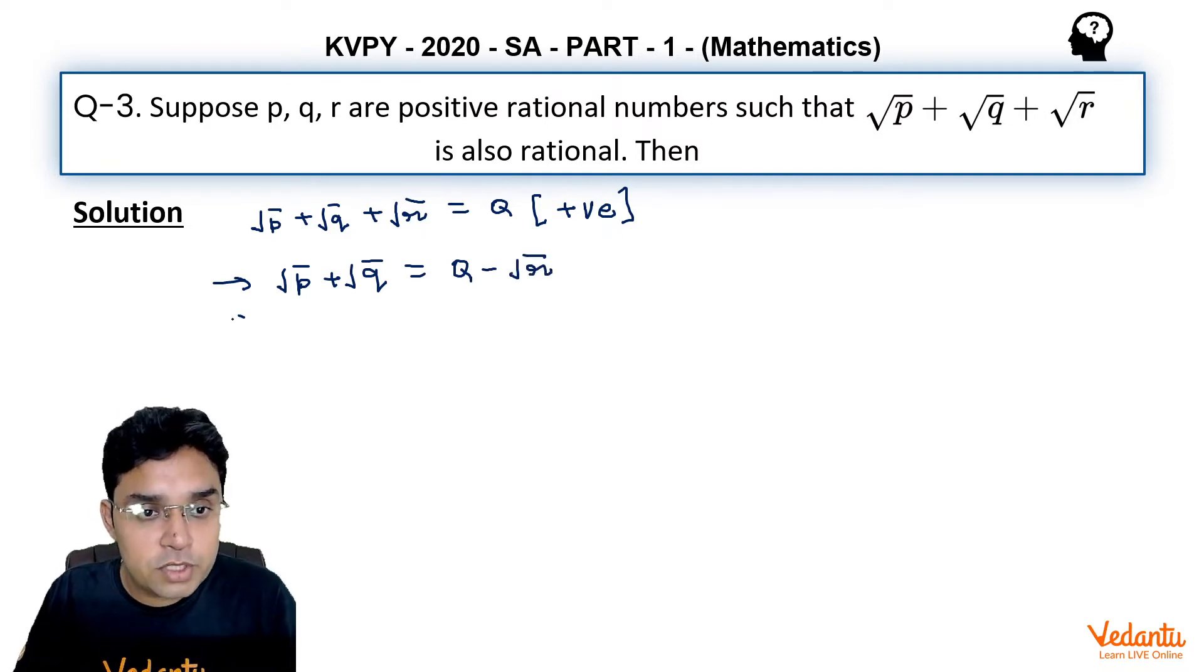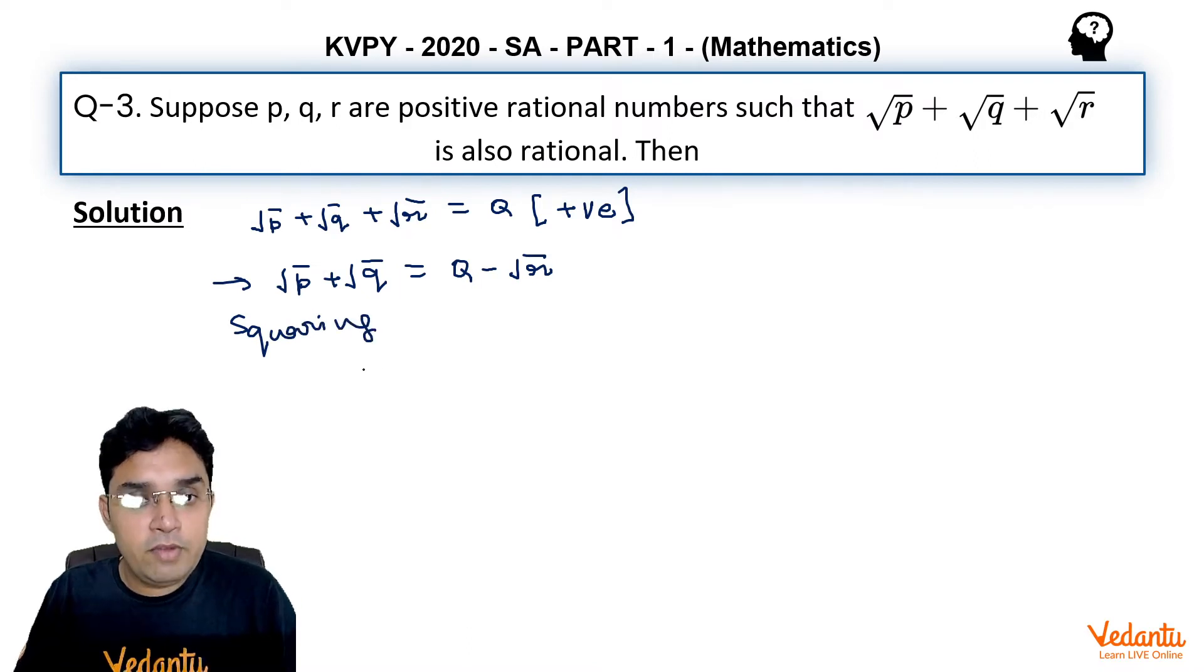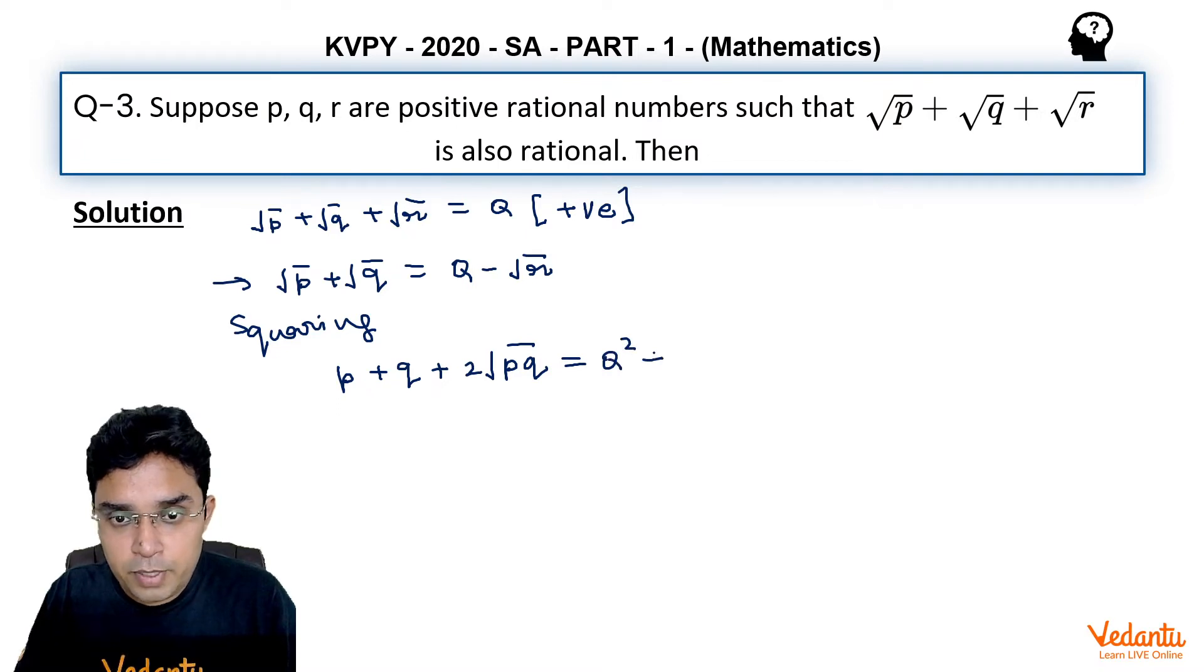Now if we square both sides, we get p + q + 2√pq on the left-hand side, and on the right-hand side, we get α² + r - 2α√r.